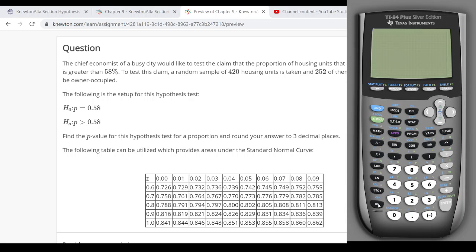So first I want to figure out what's my sample proportion. All right, so we said 252 out of the 420 homes in the sample were owner-occupied. So the proportion is, you know, 60%. 60% of my sample homes were owner-occupied.